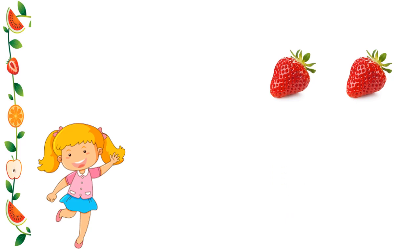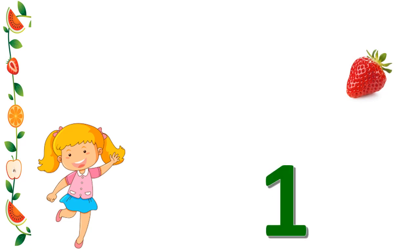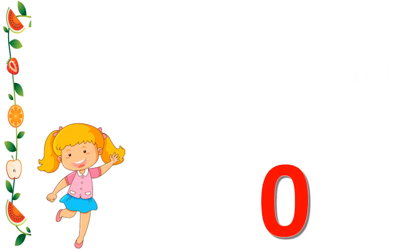The little one ate one more strawberry, so we have one strawberry left. Then she ate this strawberry also, so there are zero strawberries left. This is the zero concept.